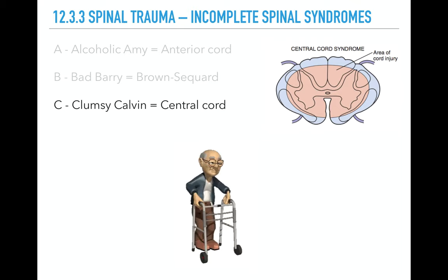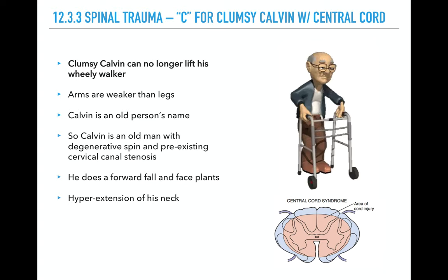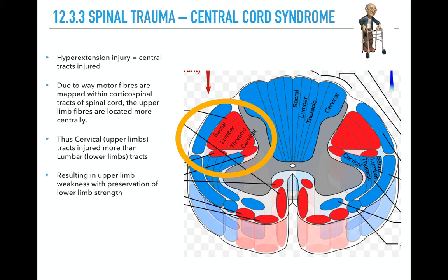Last one is clumsy Calvin — he has central cord syndrome. Calvin's had a fall and can no longer lift his wheelie walker with his arms. The key feature of central cord syndrome is upper limb weakness greater than lower limb. Calvin is an old person's name — the classic patient is an older person with degenerative spine and often pre-existing cervical canal stenosis. The mechanism is usually a fall forward with face-planting and hyperextension of the neck, causing injury to the central area of the spinal cord. Upper limb weakness predominates because the cervical and upper limb nerve fibers are closer to the center of the corticospinal tract, while sacral and lumbar fibers are at the periphery. Damage in the middle therefore affects upper limb fibers more.